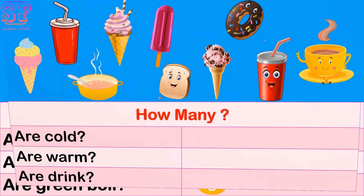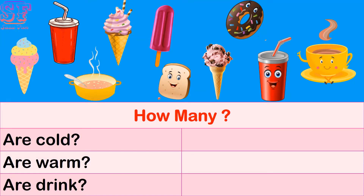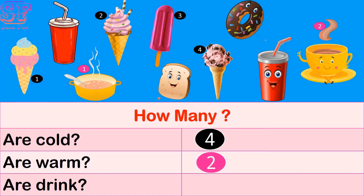How many are cold can you see? Yes, one, two, three, four — four cold. How many are warm? Yes, one, two — two warm.